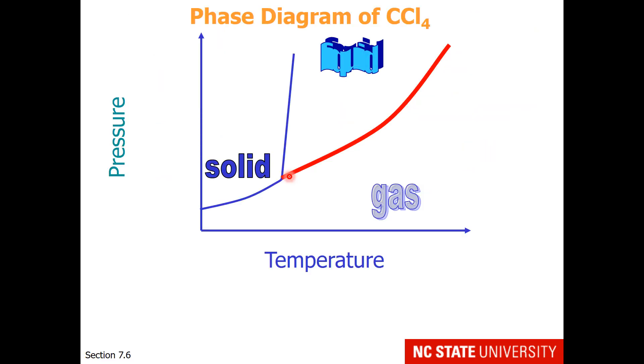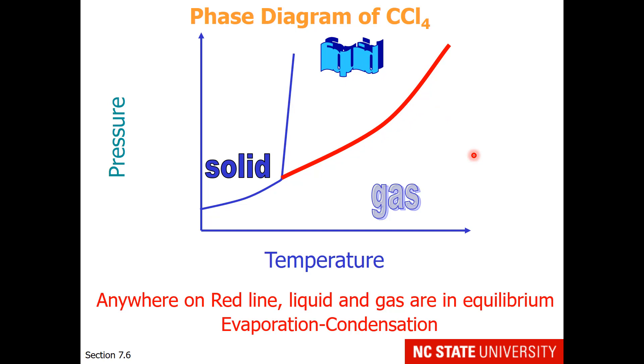Back to our phase diagram. This is what the red line is telling us, that at any temperature, liquid has a particular vapor pressure. And anywhere on the red line is where liquid and gas are in equilibrium. Evaporation and condensation are the processes that will occur.